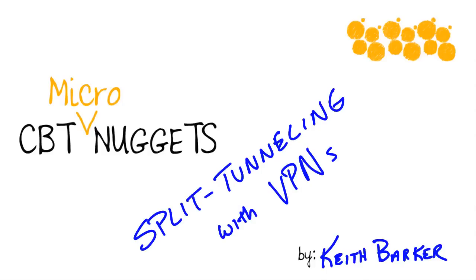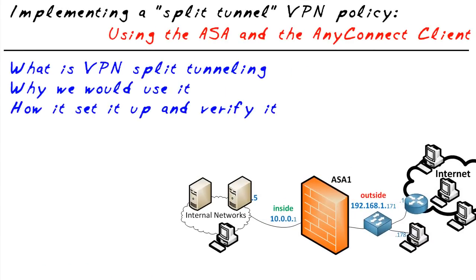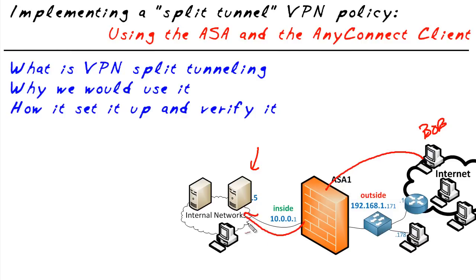Split tunneling with VPNs. VPN tunnels are terrific — they're fantastic for remote access users like Bob. He wants to access an internal server, but he's on the internet. How does he do it securely? He establishes a VPN tunnel to a VPN gateway, such as an adaptive security appliance, and then he has access to the internal resources. The benefit of this VPN tunnel is threefold.